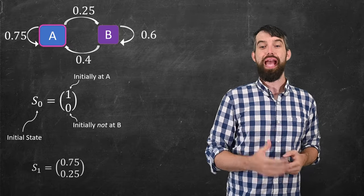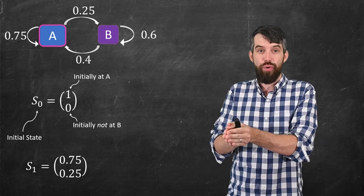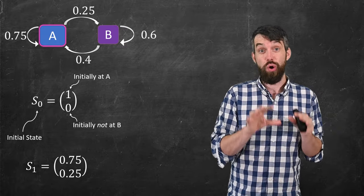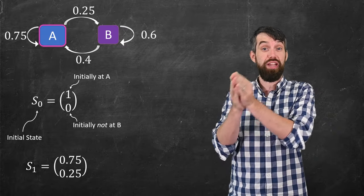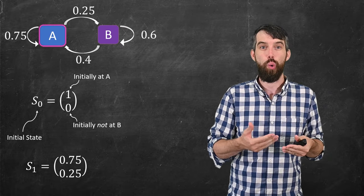Okay, then I want to go to S1. S1 is the state after one iteration. That is, if I start at my S0, my initial state, and I go one iteration into the future, I am then at S1, the state after one iteration.